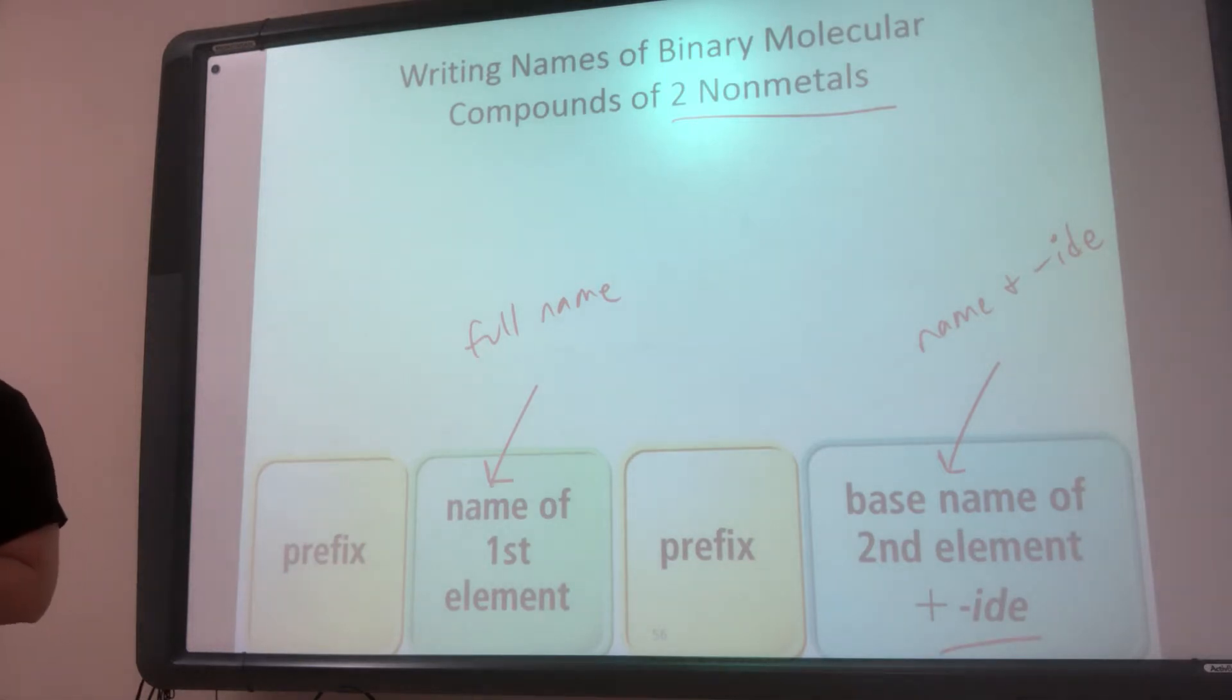But then we need to know how many of each of those we have. We're going to use prefixes in front of each of the names to indicate the number of atoms. The first prefix goes to the number of atoms in the first element. The second prefix is the number of atoms in the second element.